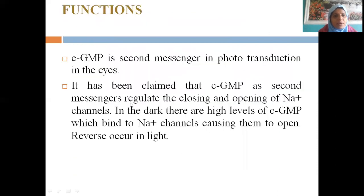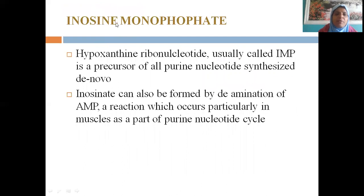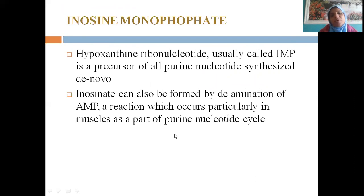Cyclic GMP is also one of the nucleotides that acts as a second messenger, helping in phototransduction — that is, the visual cycle — and in the transport of hormones from extracellular fluid into the cell. Inosine monophosphate (IMP) is a precursor for all purine nucleotide synthesis within the cell de novo. It can be formed by the deamination of AMP, a reaction which occurs particularly in muscle as part of the purine nucleotide cycle.